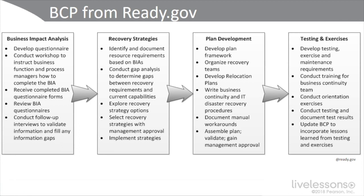From strategy we get our plans, projects, programs, and plan framework — organizing recovery teams, developing relocation plans for cold site, warm site, hot site, or mobile site. We write business continuity and IT disaster recovery procedures, documented manual workarounds, then assemble, validate, and get sign-off from management. Finally there's testing and exercises — checklist review, structured walkthrough — and once you document results, you update the business continuity plan to incorporate lessons learned, leading to continual improvement.